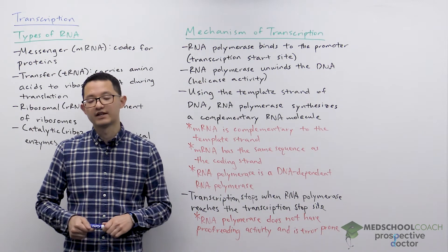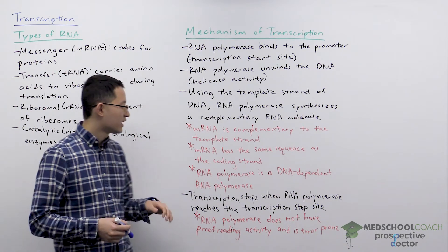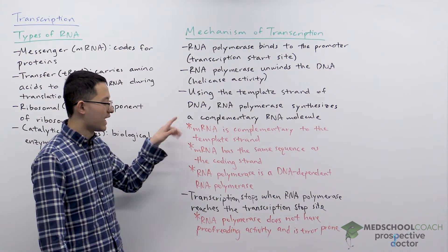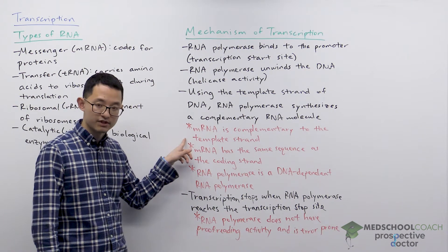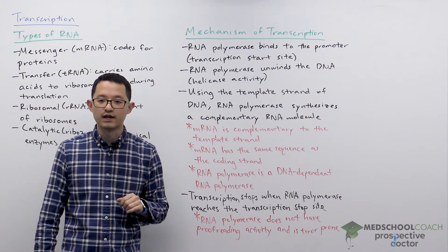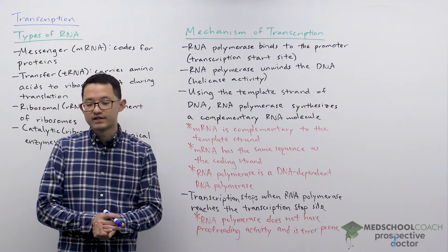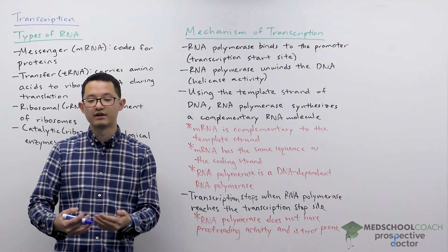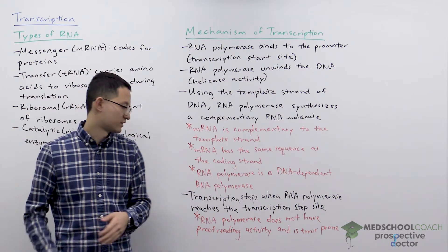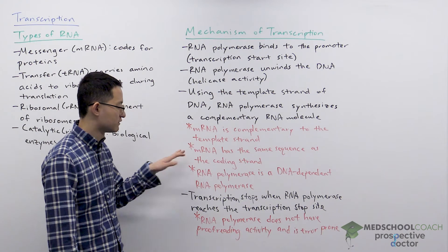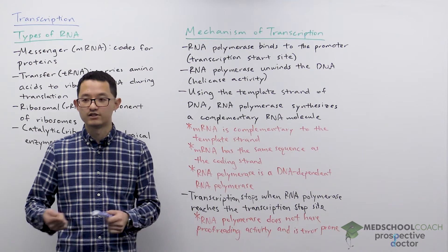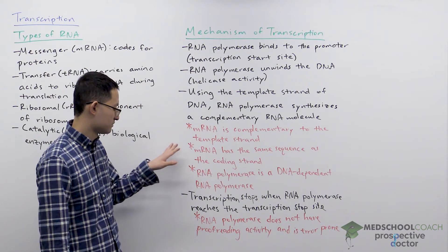On the MCAT, they often like to ask questions about this. What you want to keep in mind — usually for mRNA, since mRNAs code for proteins — is that the mRNA is complementary to the template strand, and the mRNA has the same sequence as the coding strand. That's because if RNA polymerase is making a fragment of RNA complementary to the template strand, the coding strand is also complementary to the template strand, which is why mRNA has the same sequence as the coding strand. The one exception is that DNA has thymine and RNA has uracil, but aside from that they have the same sequence.